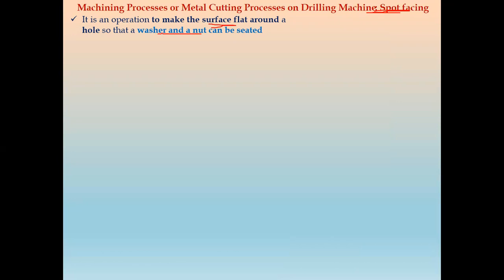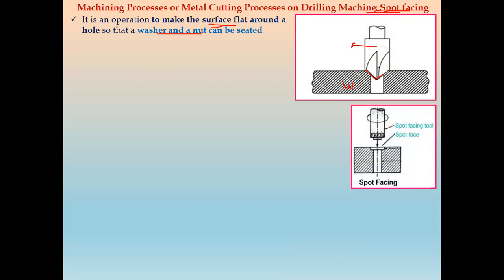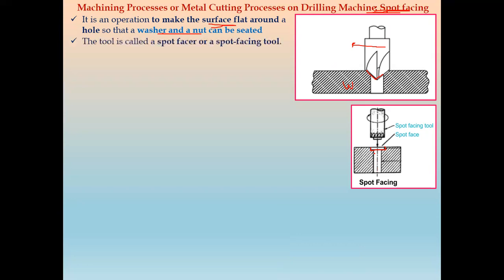The next operation is spot facing. It is used to make the surface flat around a hole so that a washer or nut can be seated on that flat surface. The tool used is called a spot facer or spot facing tool. This creates a small recessed flat area where a washer or nut can be fitted in the component.